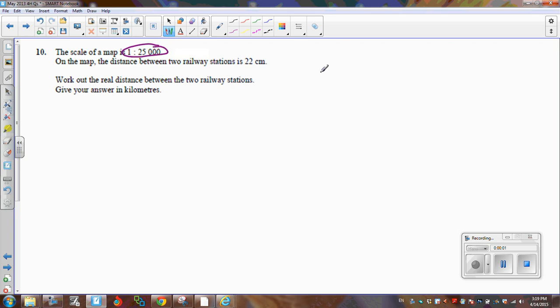A map scale of 1 to 25,000 means, effectively, if this is the map and this is real life.